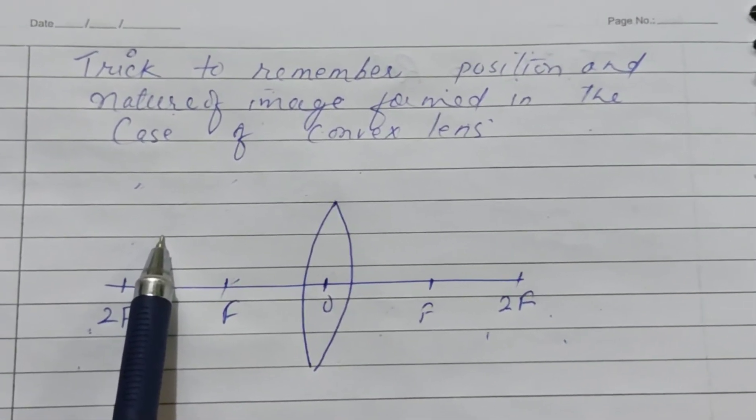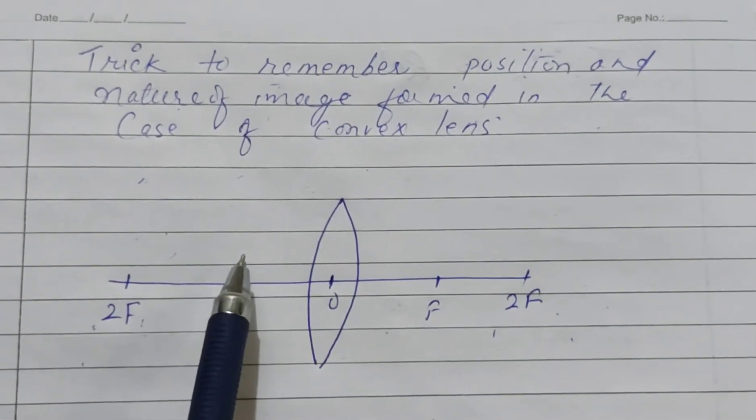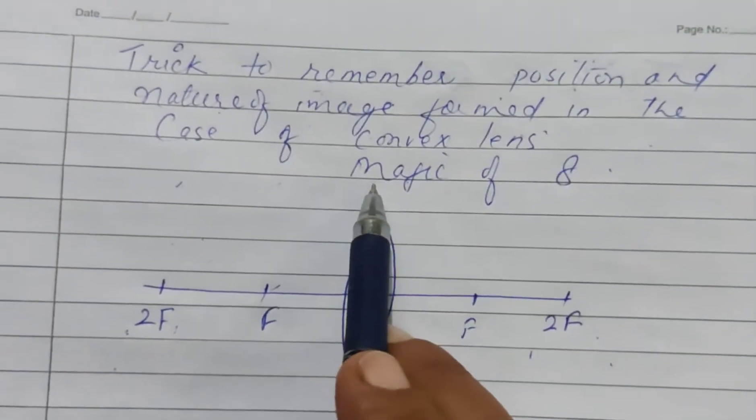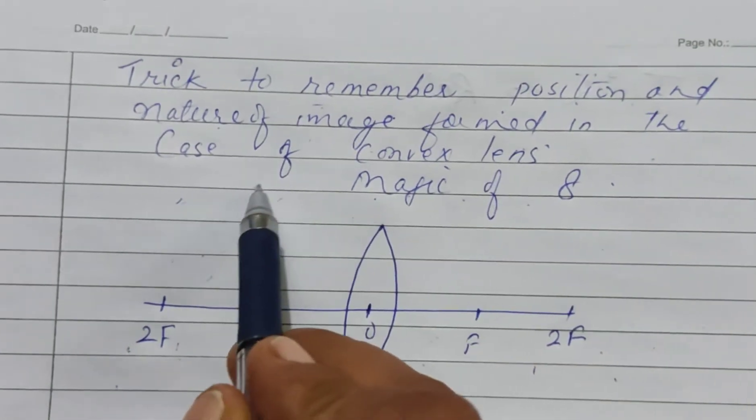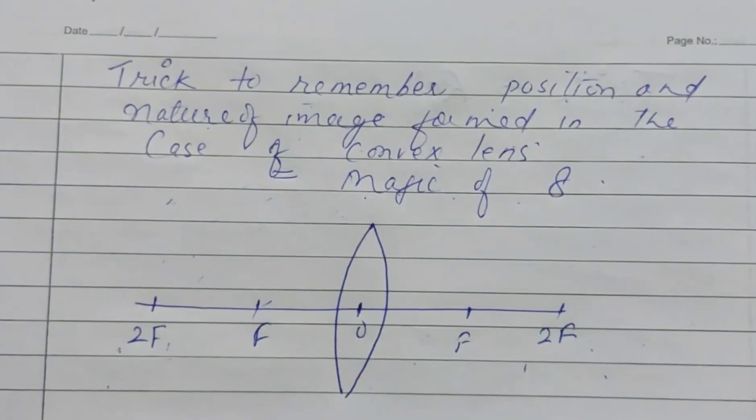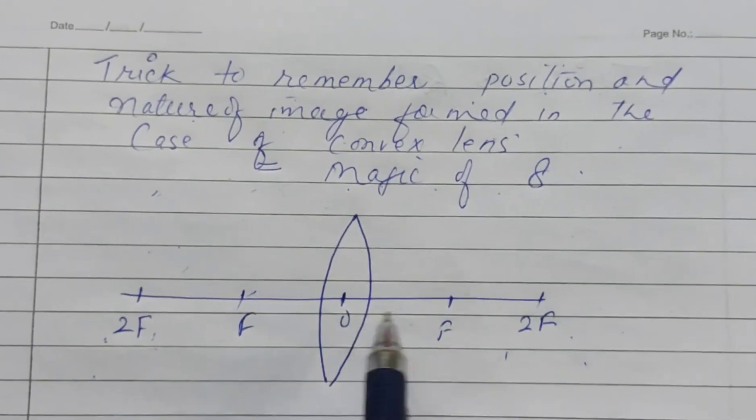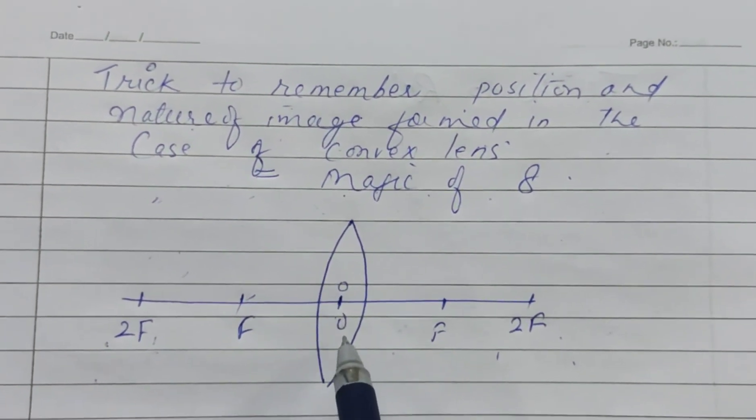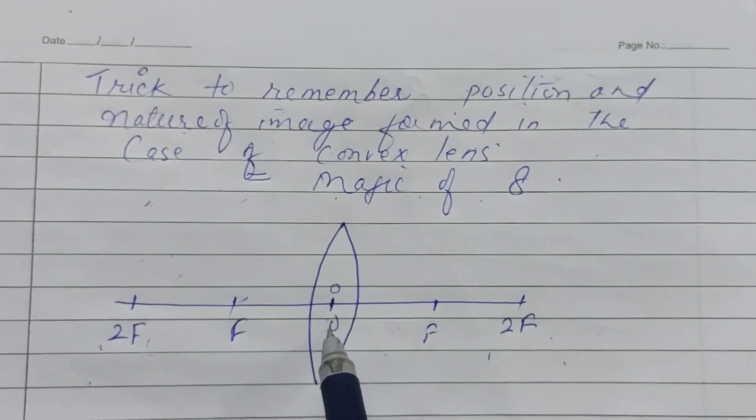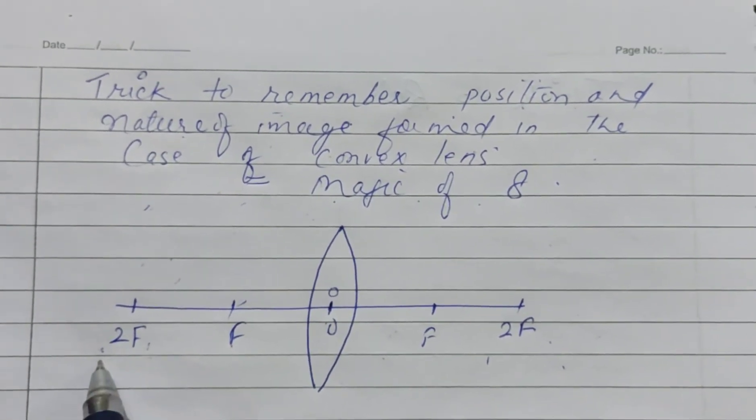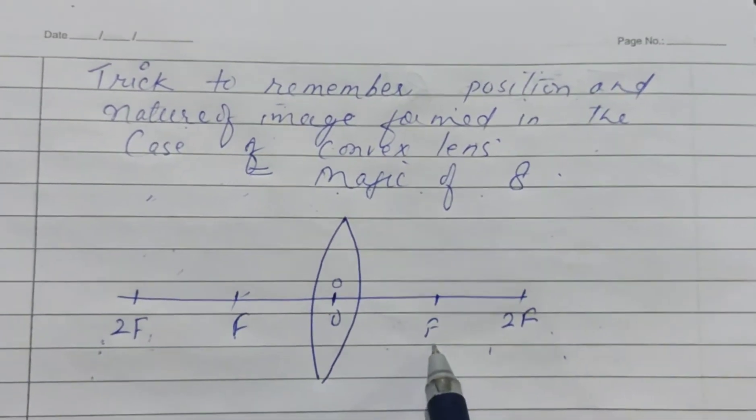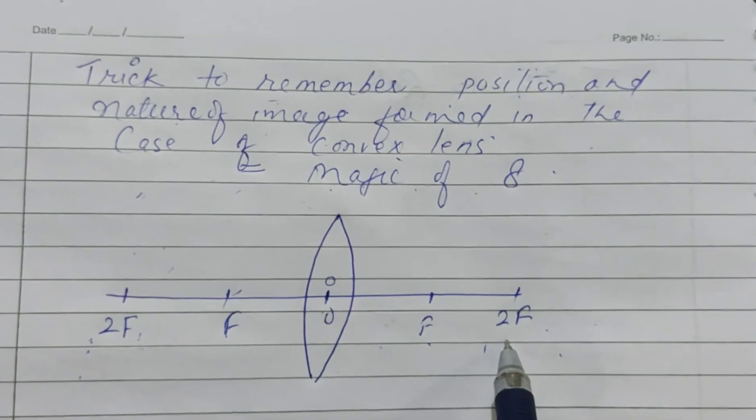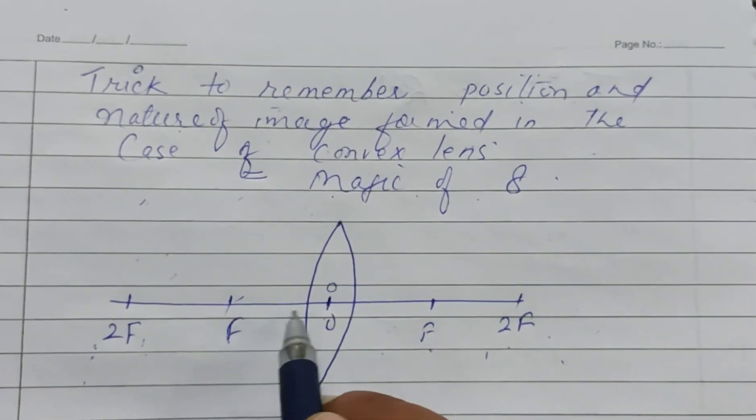We can define the magic of number 8. Now how it works? What we will do is write a number 0 at optical center. There is a point f and 2f towards this side. Similarly we have f and 2f towards right side.